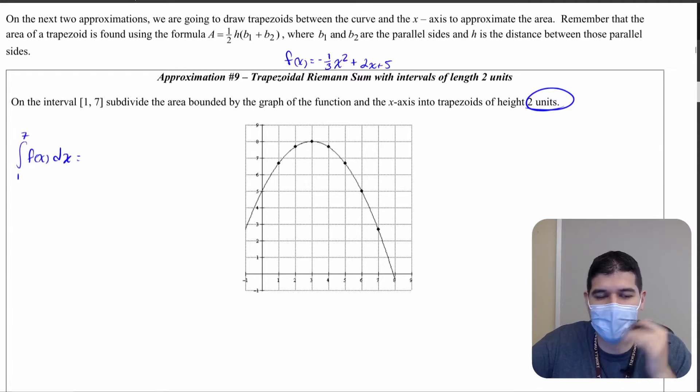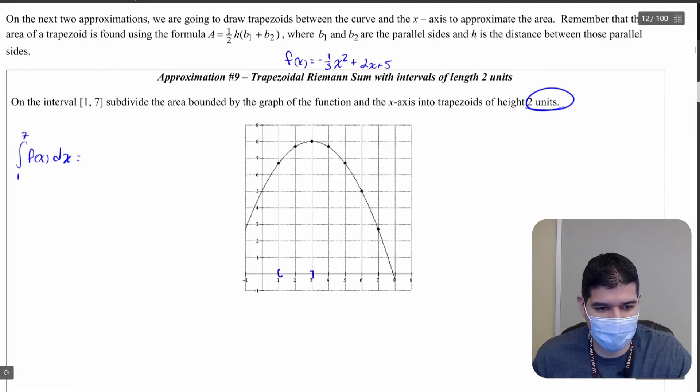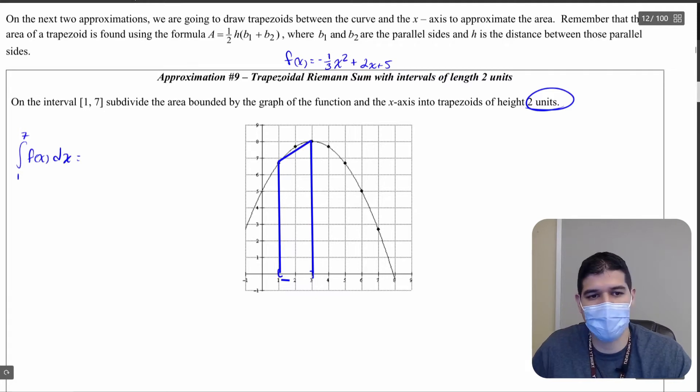Now don't worry that it says height right now. We're going to still divvy up our rectangles. I know I'm getting two trapezoids right now but we're still going to go from one to three. What you're going to do is draw a line up to f of one and a line up to f of three, and then you're going to connect the two. That is actually the shape of a trapezoid if you turn your head sideways.